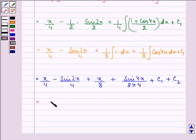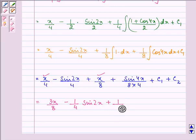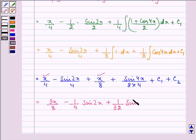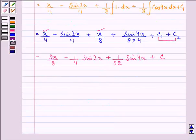On adding these two terms, 3x by 8 minus 1 by 4 sin 2x plus 1 by 32, that is 8 into 4, sin 4x, and c1 plus c2 can be combined and written as c.